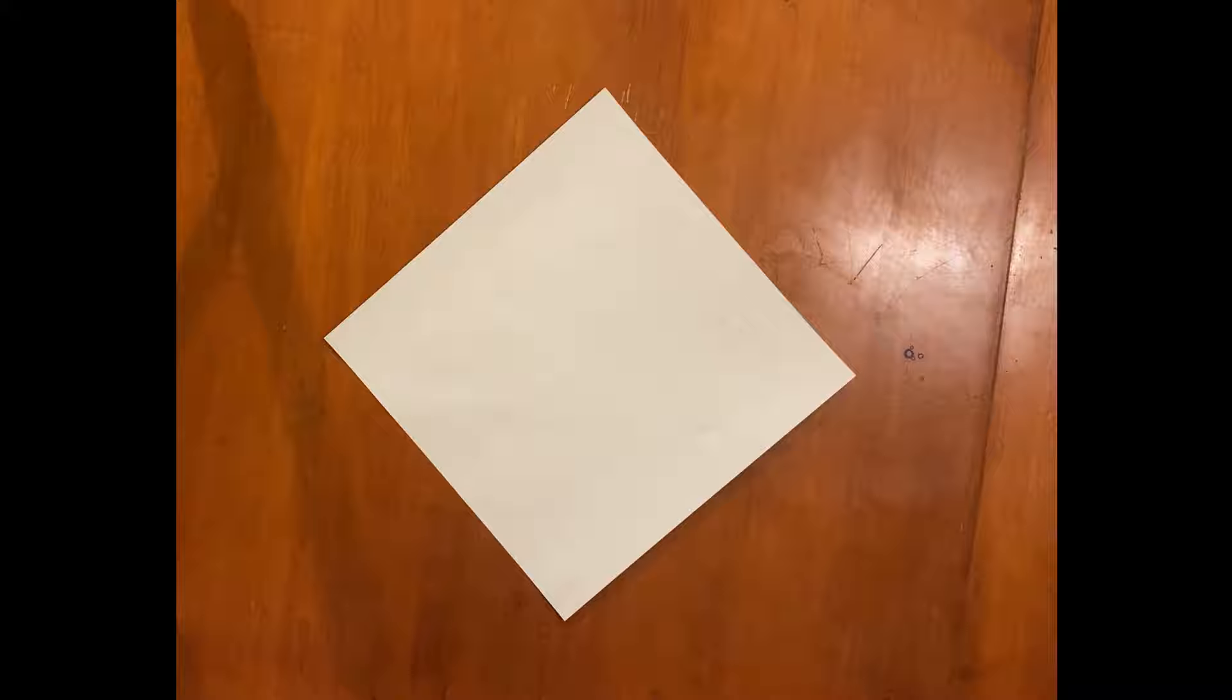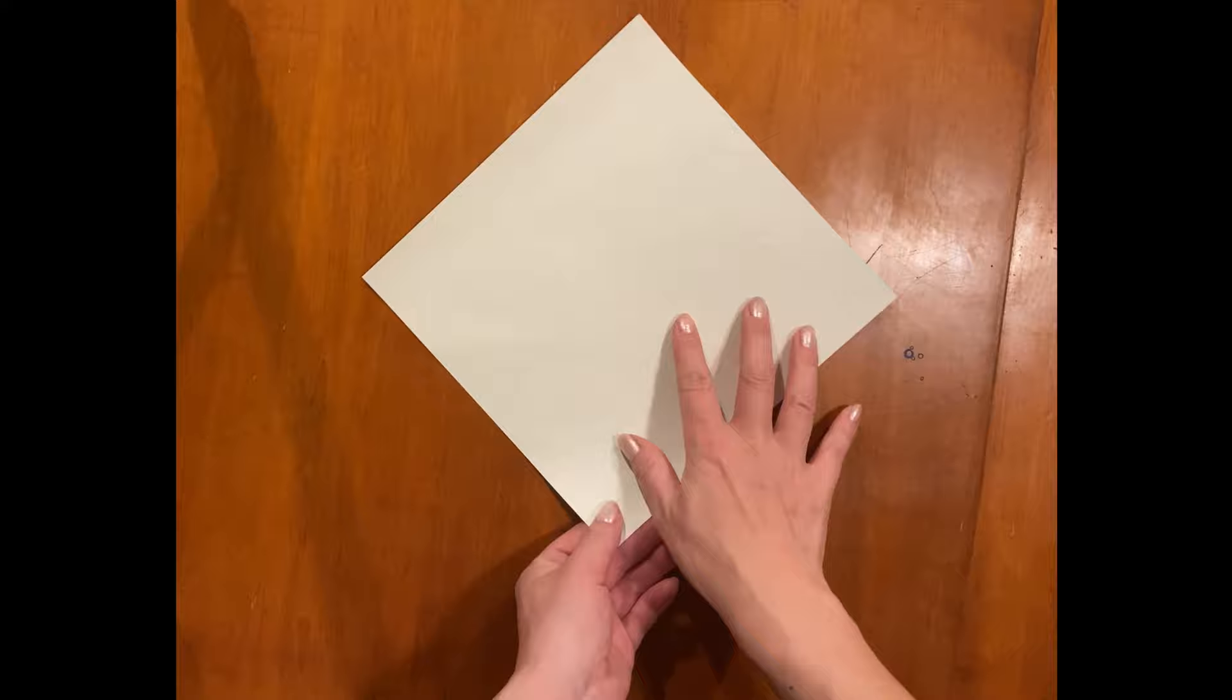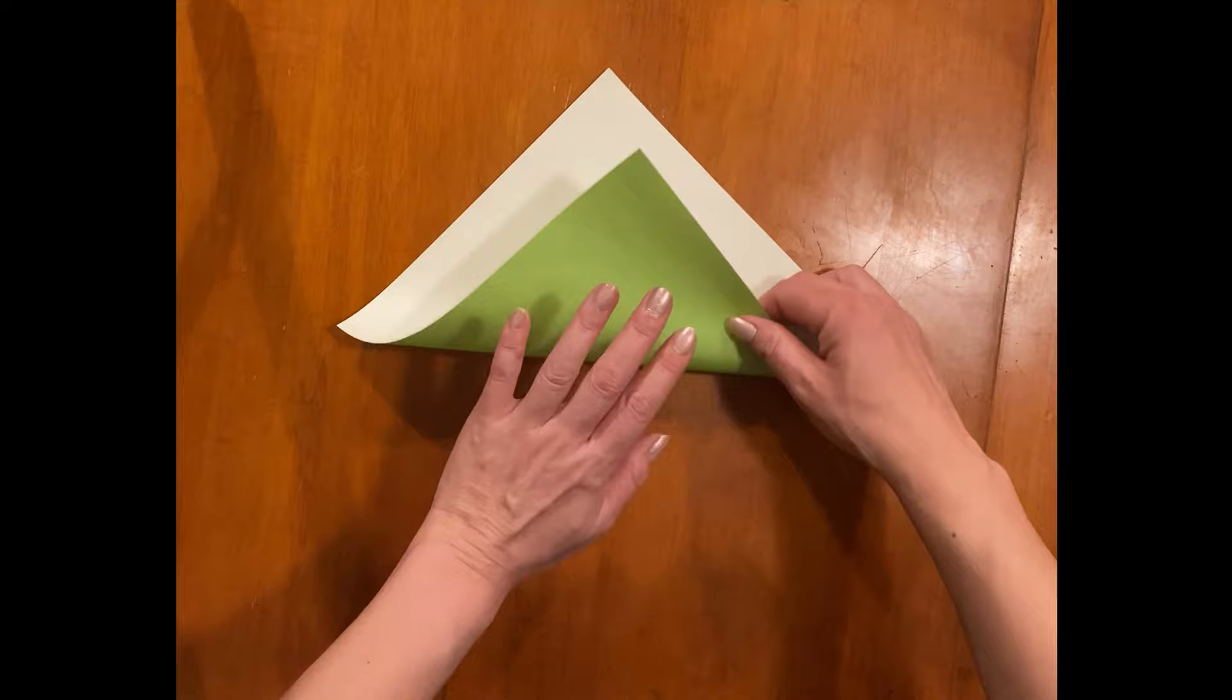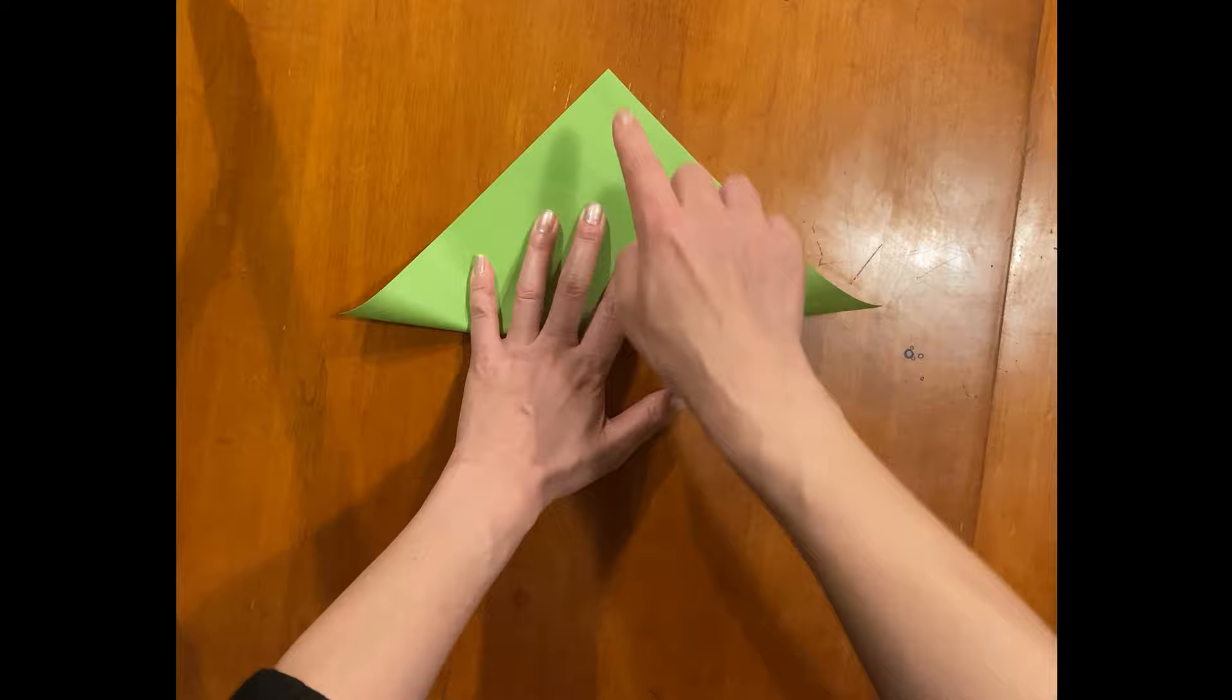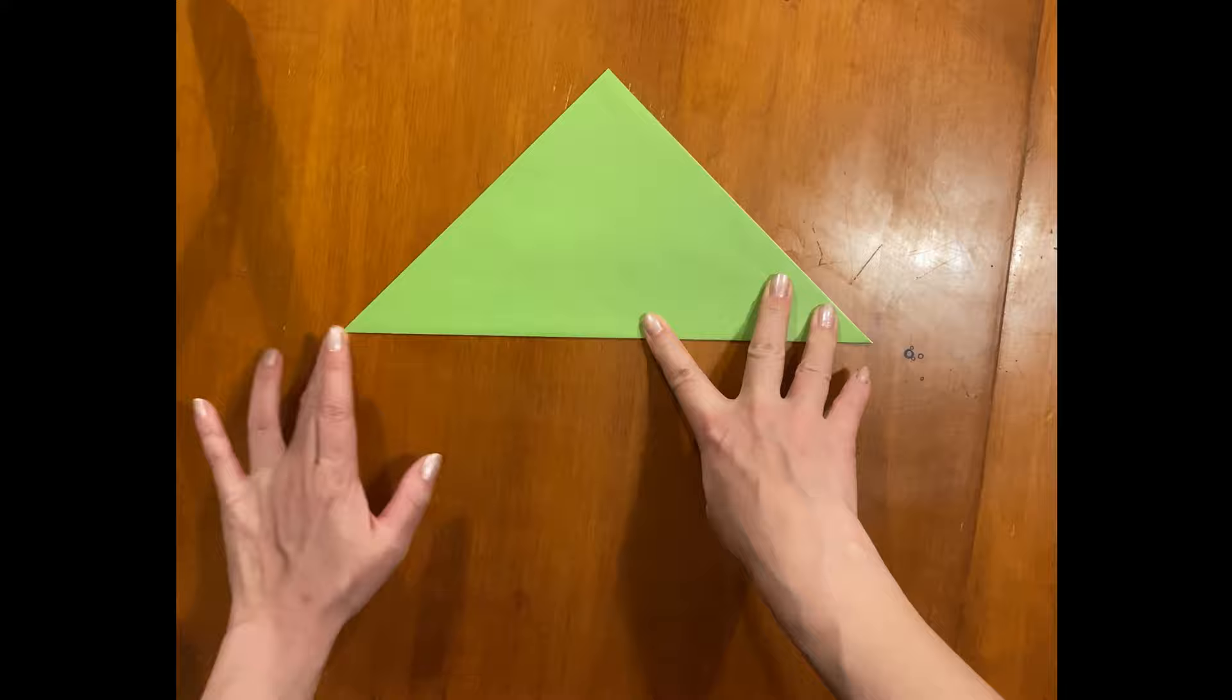First step: you have this piece of paper that is a square, and you'll make a triangle. Make sure the tip and tip meet together and hold it.